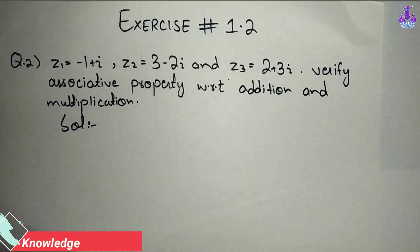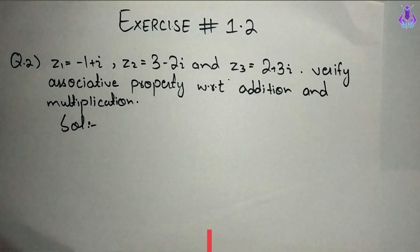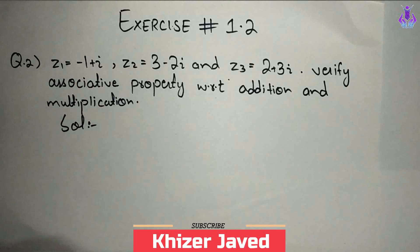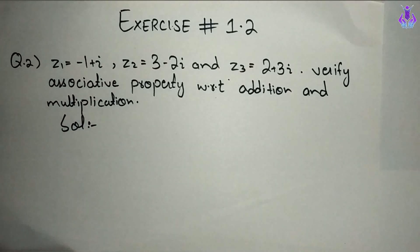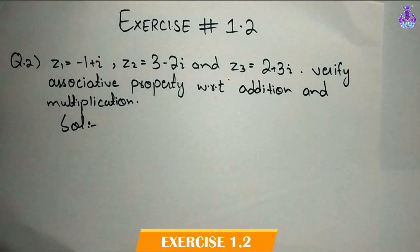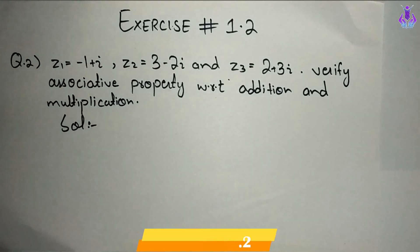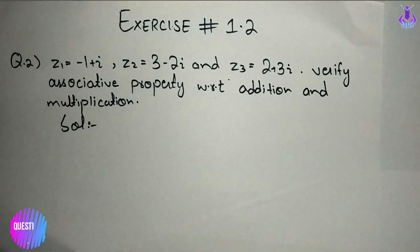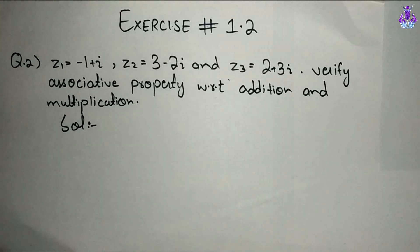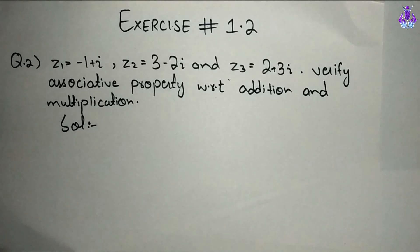Bismillahirrahmanirrahim, welcome to Knowledge Syndicate. I am your teacher Khizr Javed. Aaj hum log start kareenge Exercise 1.2, Question Number 2. Hamare paas z1 is equal to minus 1 plus iota, z2 is equal to 3 minus 2 iota, and z3 is equal to 2 plus 3 iota.